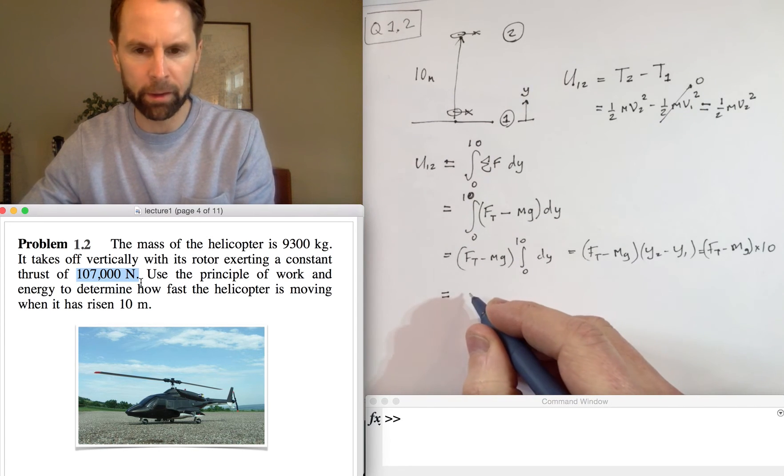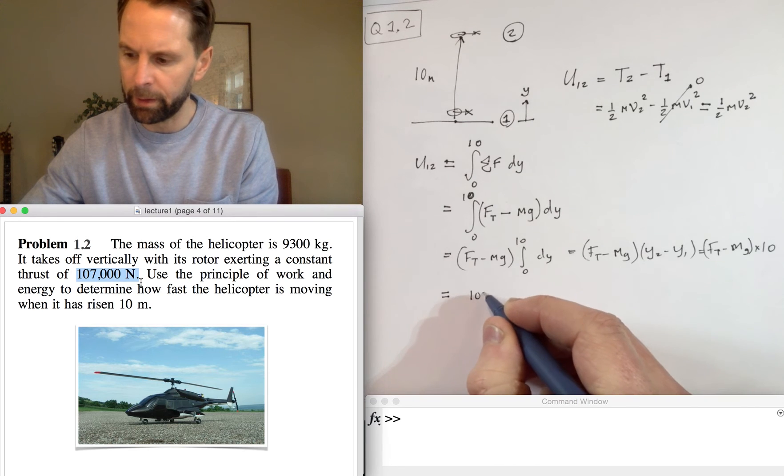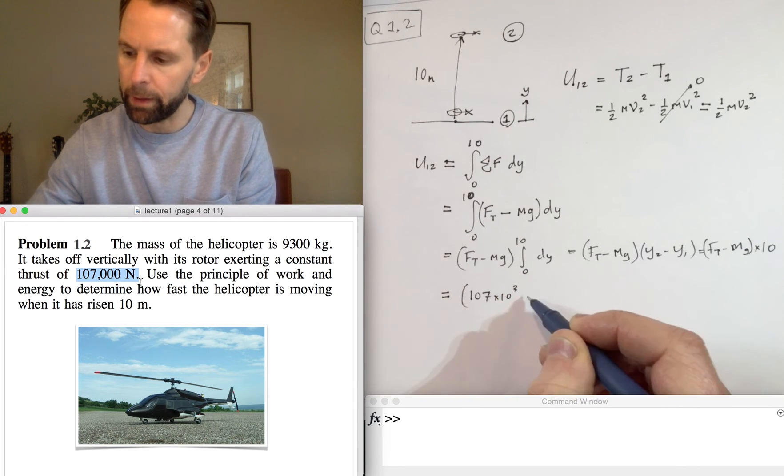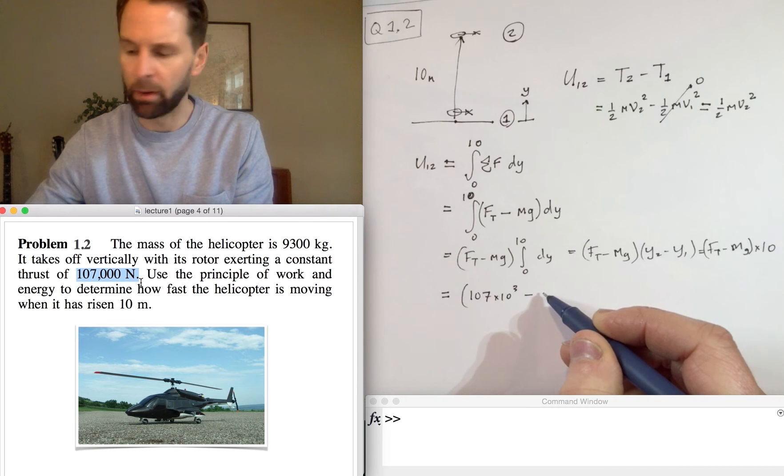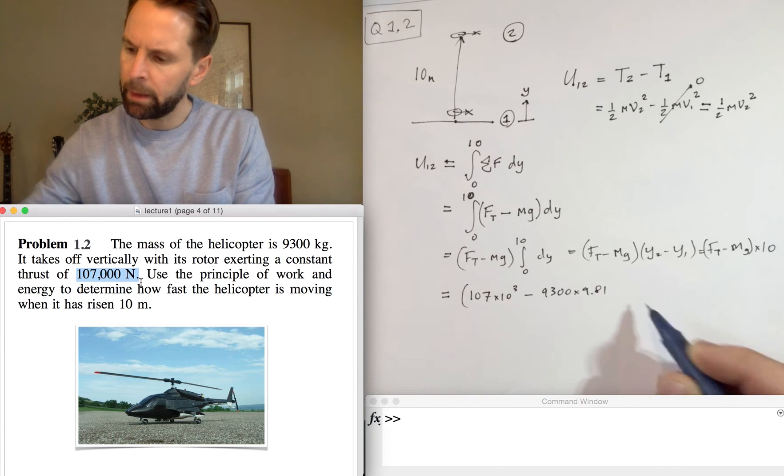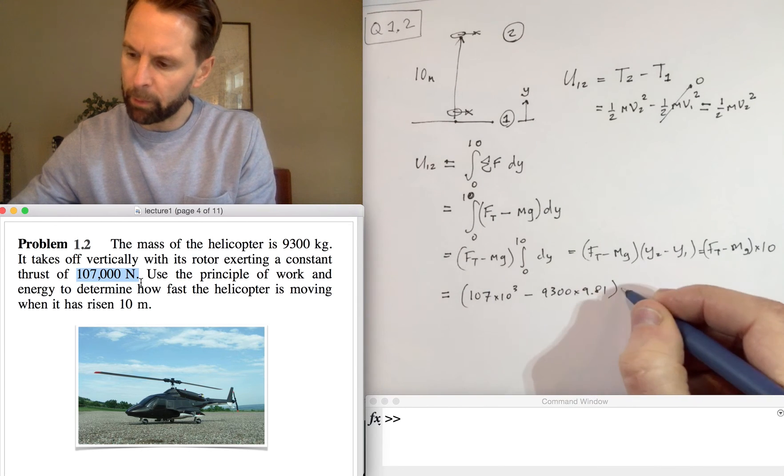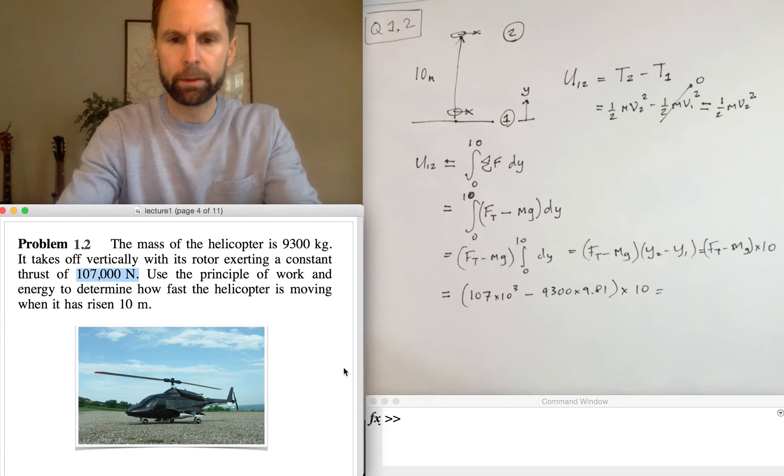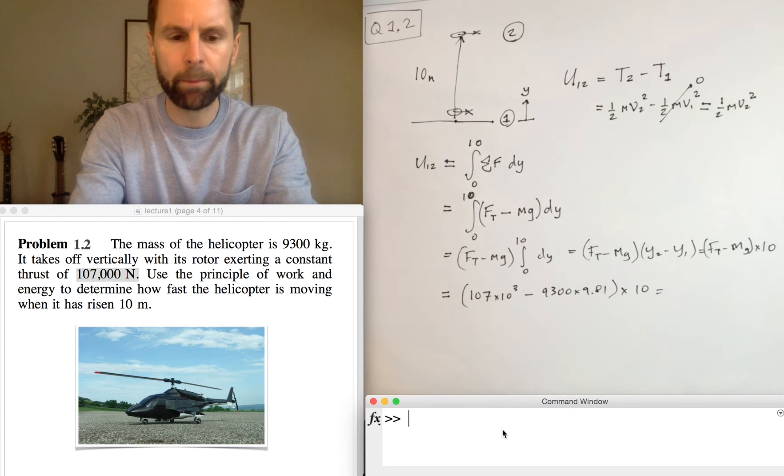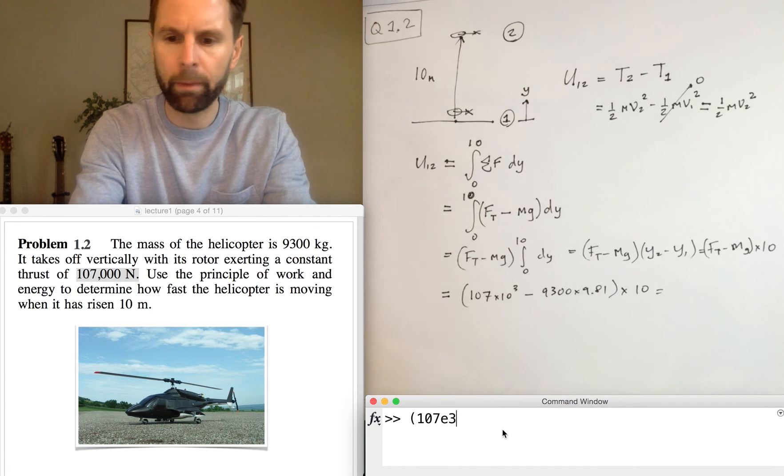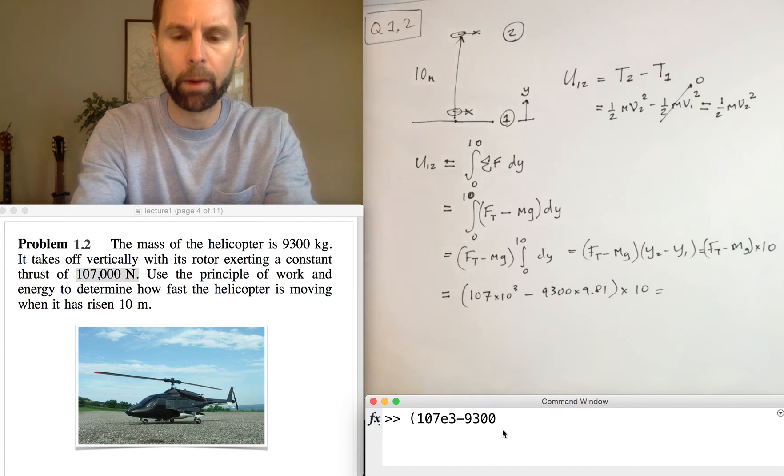Let's put some values in there. So the thrust is 107 kilonewtons, the mass is 9300 kilograms times 9.81, and we're going to multiply that by 10.